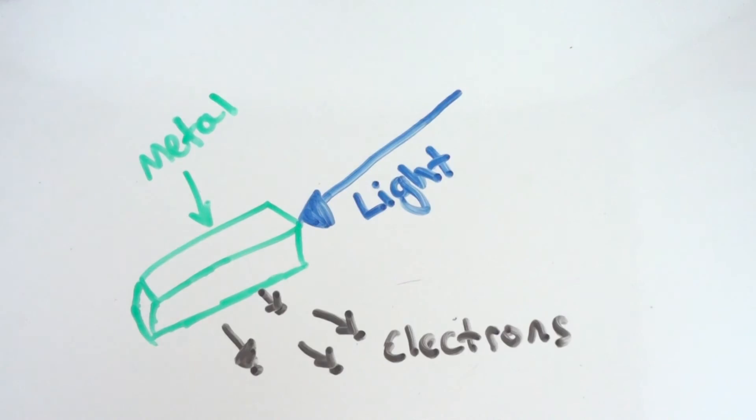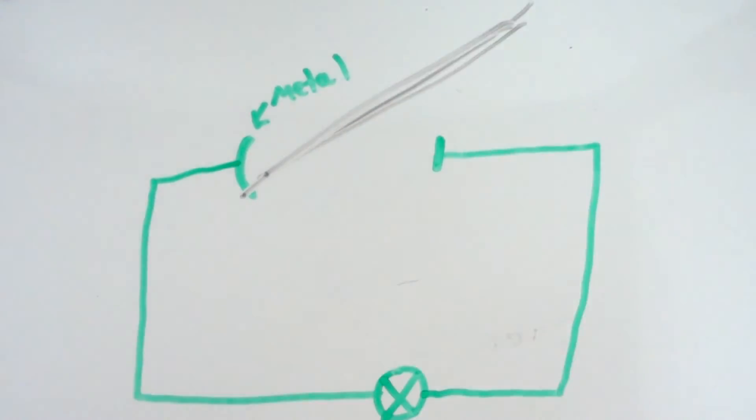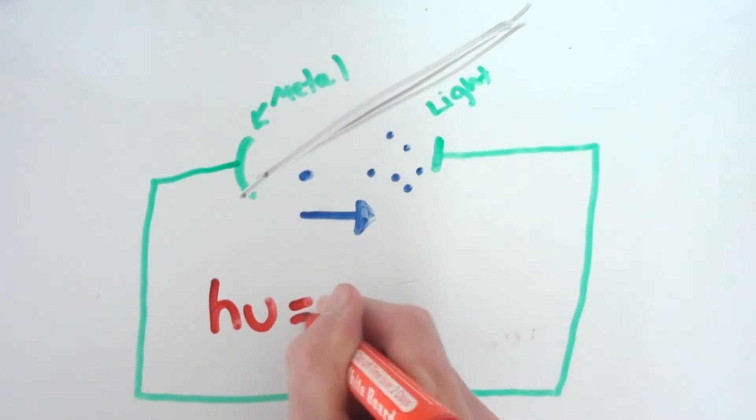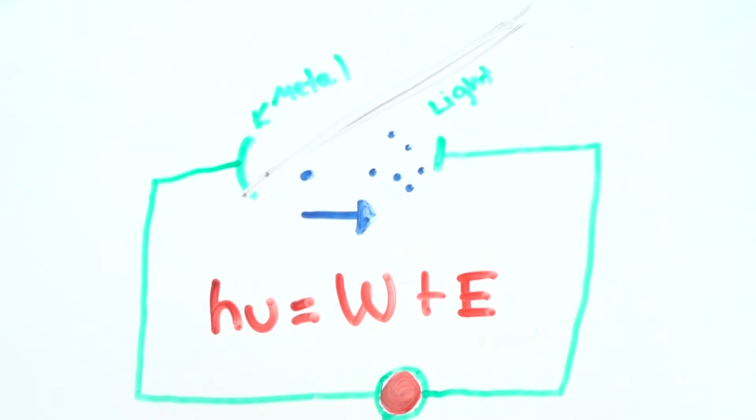This allows you to create a current around a circuit by shining a light on a metal, and under the right circumstances those electrons will fly onto the other end of the circuit, causing a current. Einstein created the equation HV equals W plus E.